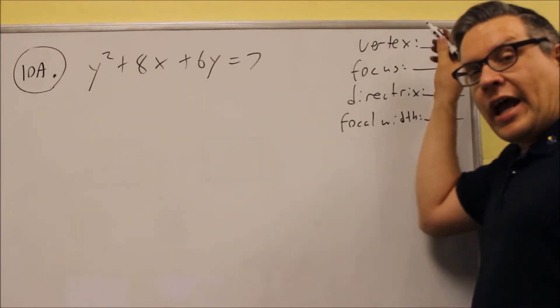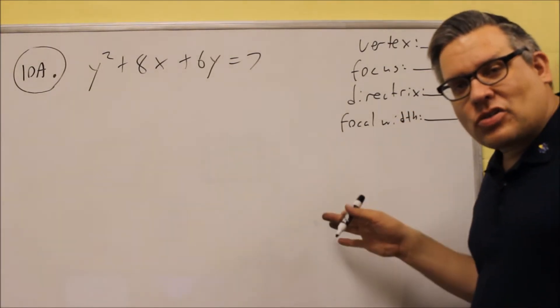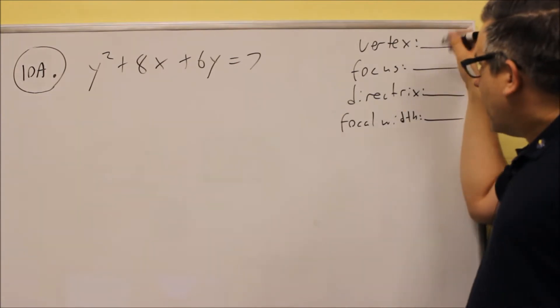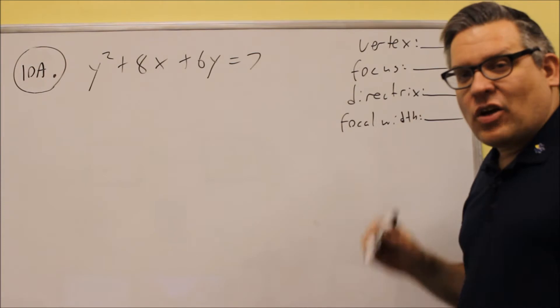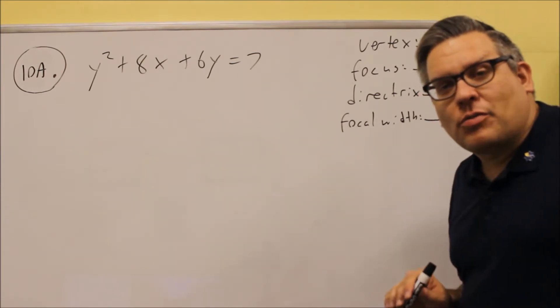Number 10, if you look at what they're asking for here, we can tell that this is going to be a parabola because parabolas are the only ones that have a vertex, directrix, and focal width. That only applies for parabolas, so that's why I know what kind of graph this is going to be.